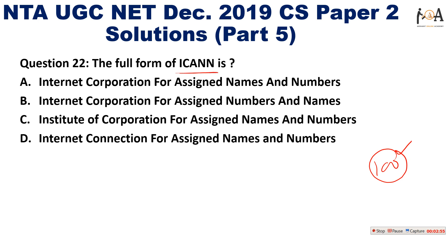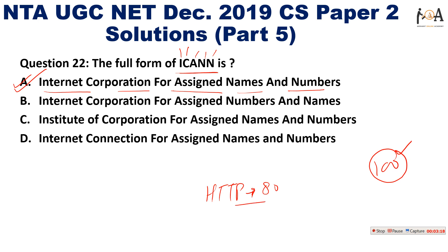The next question is the full form of ICANN. ICANN stands for Internet Corporation for Assigned Names and Numbers. It is an agency that assigns names and numbers — for example, HTTP is assigned port number 80. ICANN is responsible for assigning all such values and port numbers to protocols and characters.